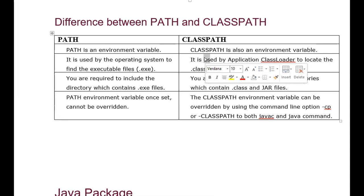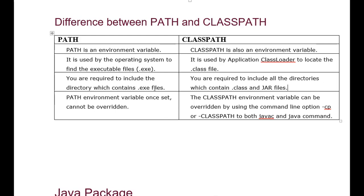If we have some Java programs compiled from another system, we get .class files that we need to locate and run, so we use CLASSPATH. The third point: PATH requires you to include the directory containing .exe files — like the Java bin folder, which contains javac.exe, java.exe, and other executables. CLASSPATH requires you to include all directories containing .class and .jar files.